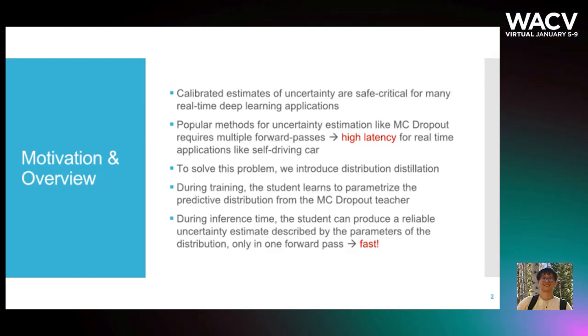To solve this problem, we introduce uncertainty-aware distribution distillation based on MC Dropout. Similar to knowledge distillation, we adopt a teacher-student paradigm. During training, the student network learns to parametrize the predictive distribution from the MC Dropout teacher. During inference time, the student can produce a reliable uncertainty estimate described by the parameters of the distribution in only one forward pass.